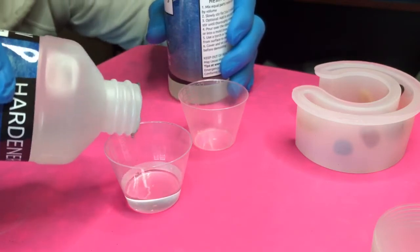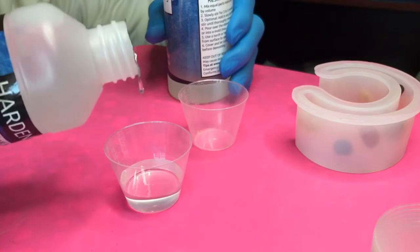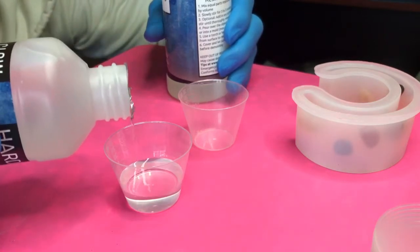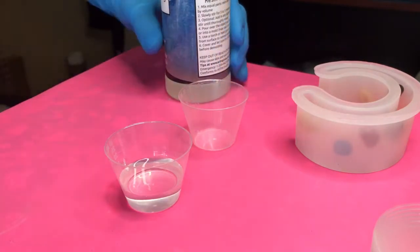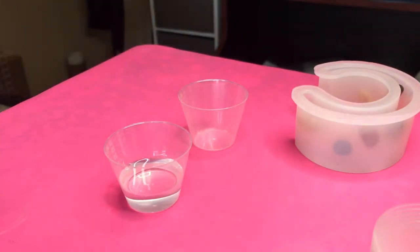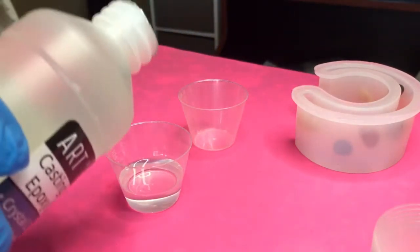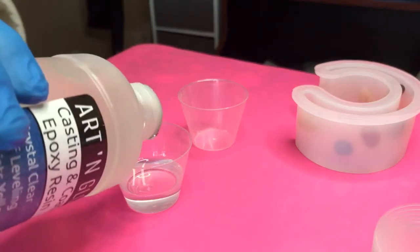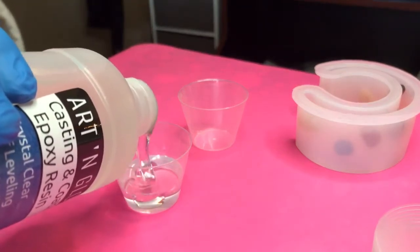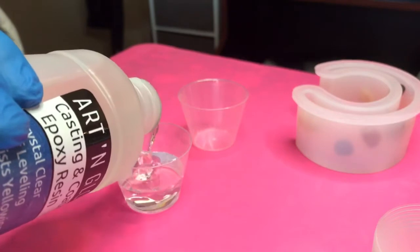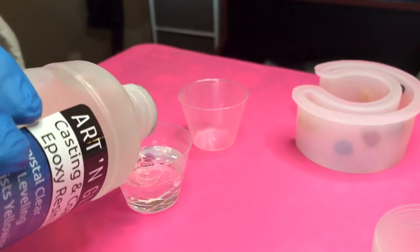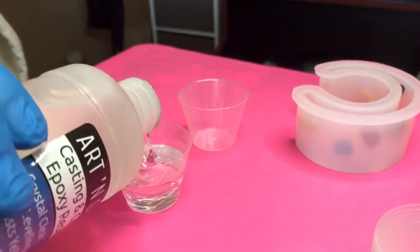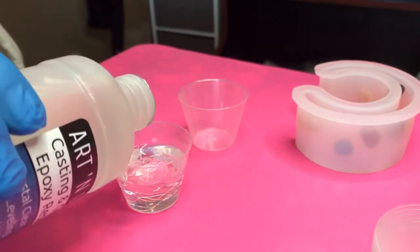As you can see here, I'm going to mix it in one cup because when I mixed it in two cups before, I didn't get all of one of the mixtures out of one cup and it didn't turn out right. The epoxy ended up being kind of squishy. If you don't get your measurements exact, your epoxy is not going to harden the right way.